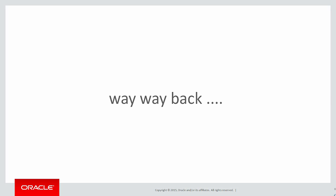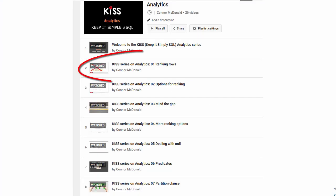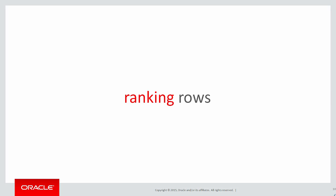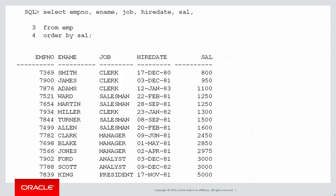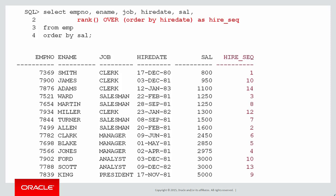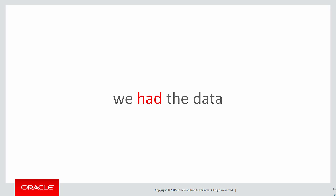Way back in video number one, our first analytic was on ranking rows. The requirement was simple: I need the sequence in which everyone joined the company. We did an analytic using the rank function ordering by hire date to get the hire sequence, something we're very familiar with now. That was easy because we had the data — the data existed and we could rank it.